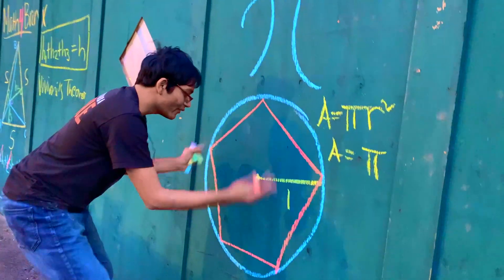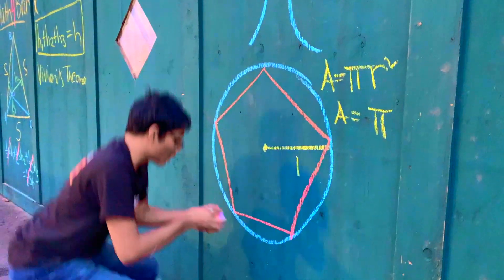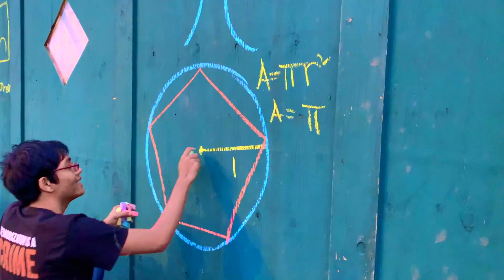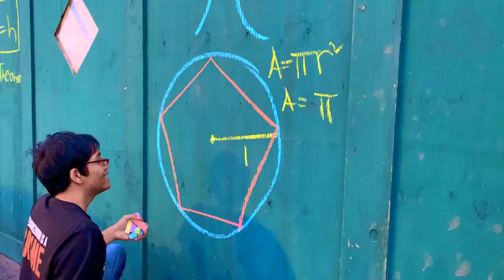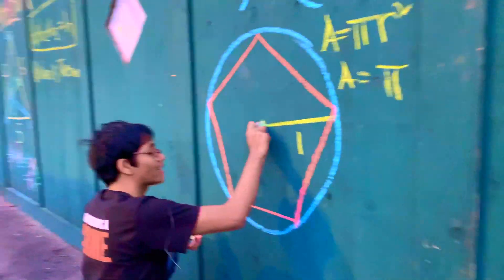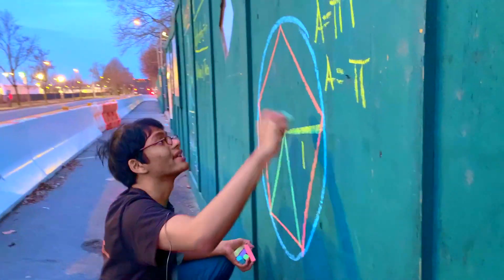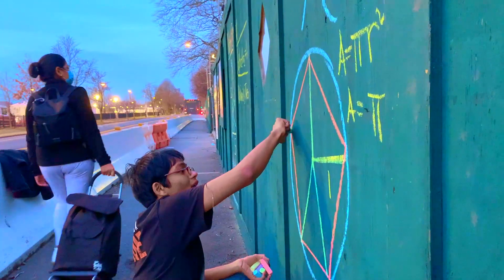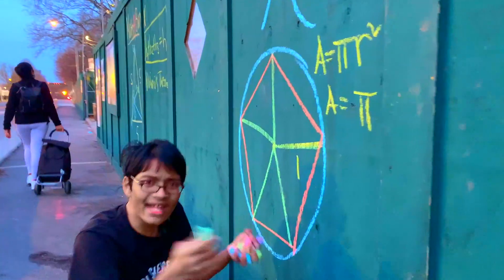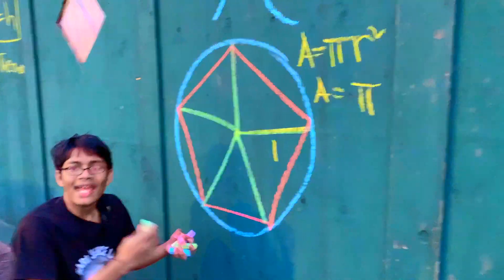So, how do we find the area of this pentagon? Well, break it up — triangulate it. We're going to take this interior point and break up the pentagon into five triangles. Each of these triangles has an area.